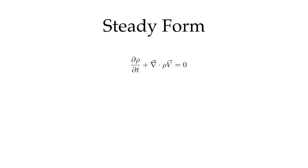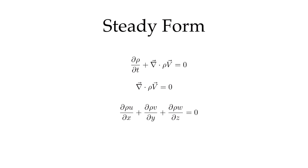Now let's look at some simplified forms. If I have the steady form — steady just means the time derivative is zero — then that term is zero, and I see that the divergence of the density times the velocity vector is equal to zero. Going back to Cartesian notation, I have the derivative of rho u with respect to x, the derivative of rho v with respect to y, and the derivative of rho w with respect to z, all equal to zero.